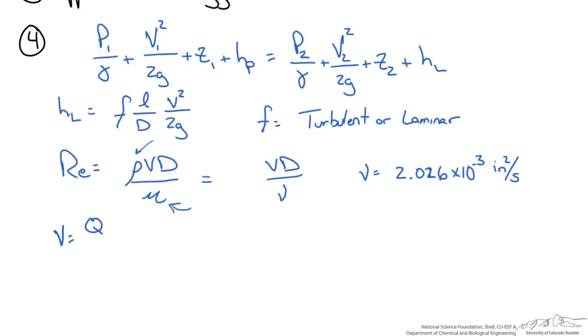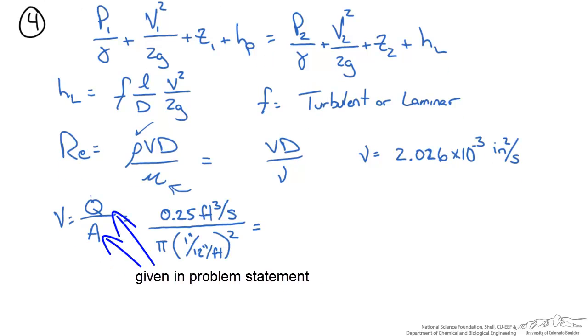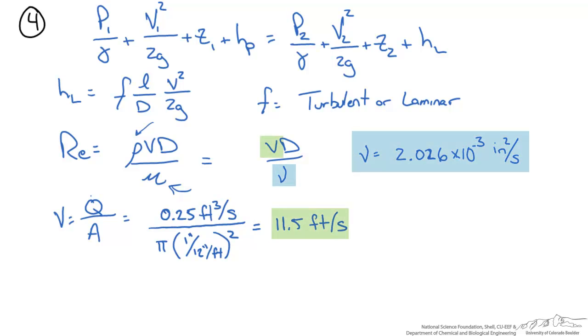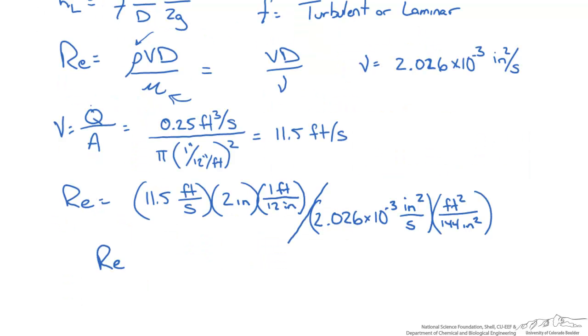The velocity of our fluid can be calculated as volumetric flow rate over cross-sectional area. When we do this calculation we get a velocity of 11.5 feet per second. Now we have velocity and kinematic viscosity. When I calculate the Reynolds number I get 1.4 × 10⁵, which is greater than 2,100 for the transition from laminar to turbulent flow. We can safely say this flow is turbulent.